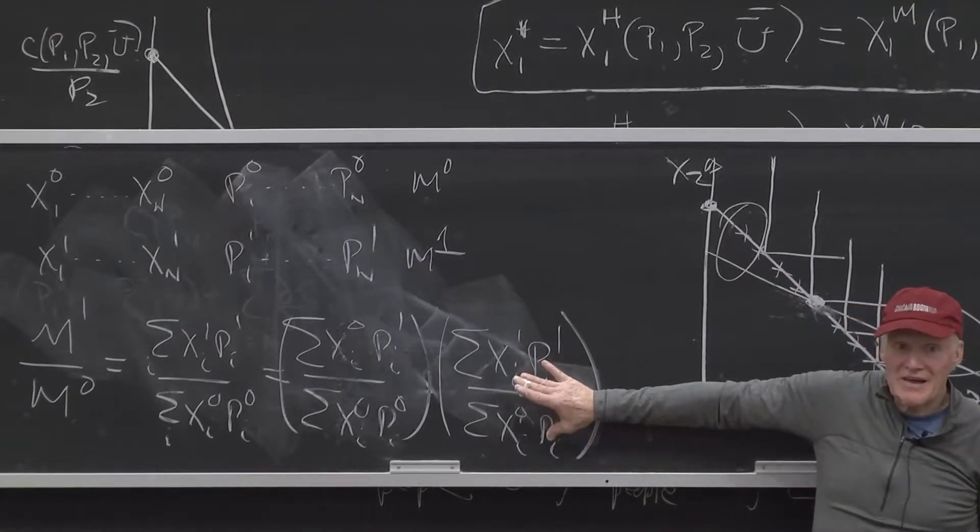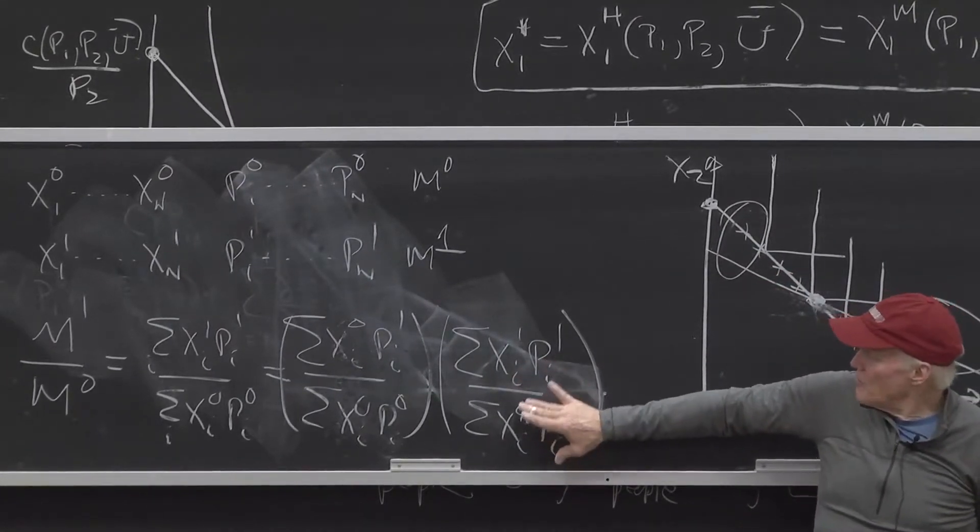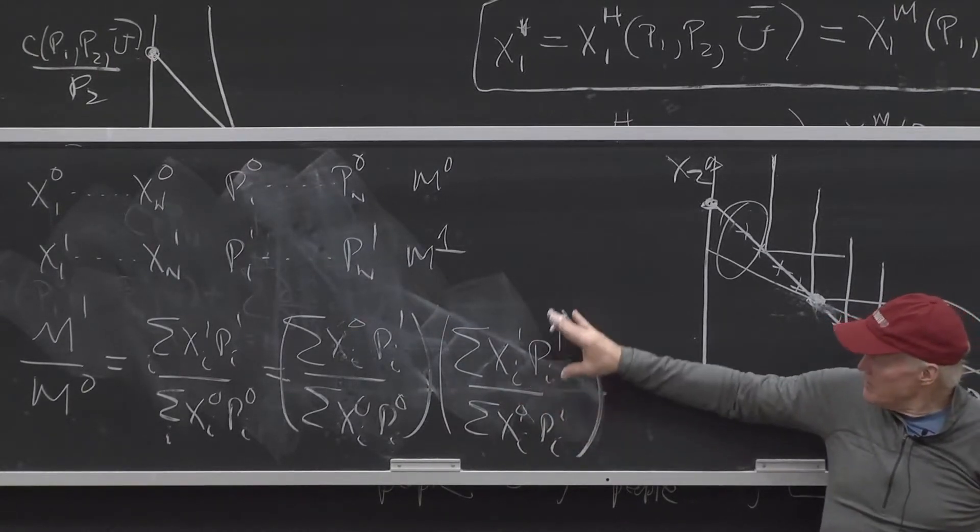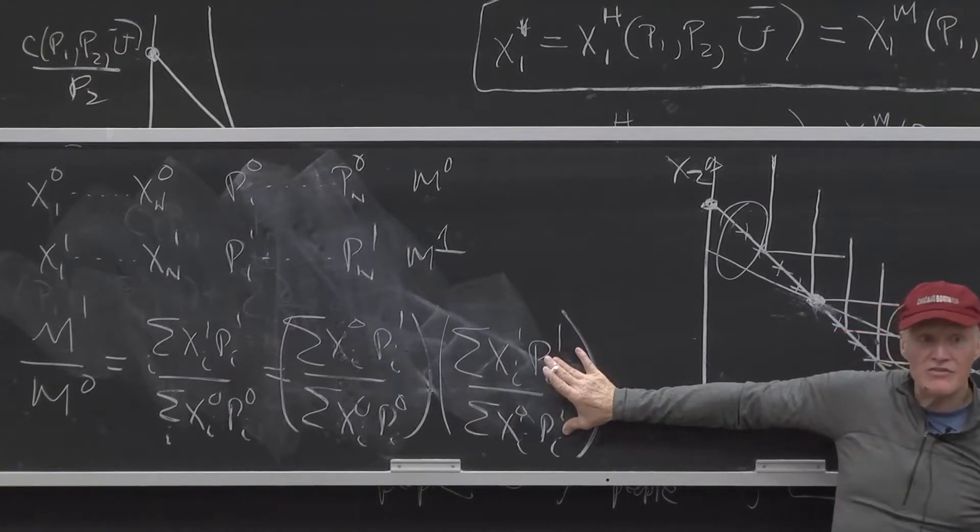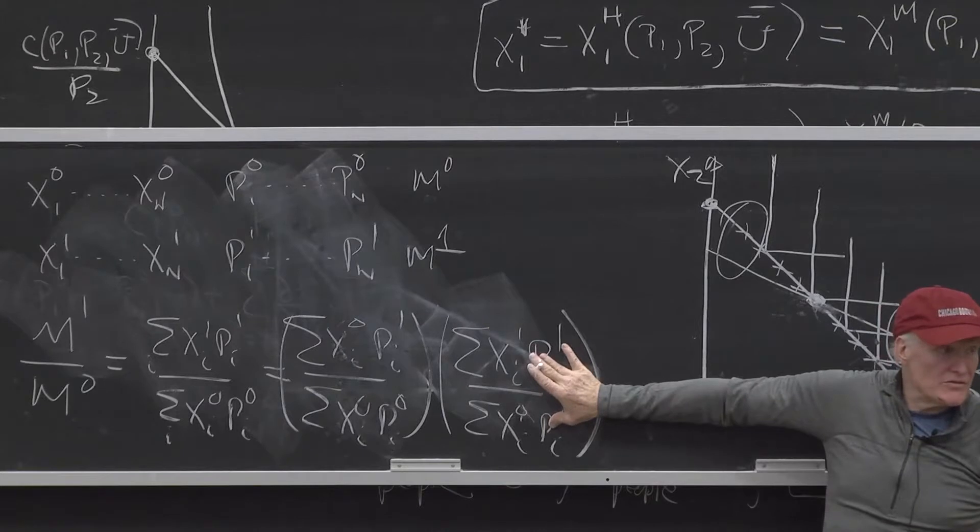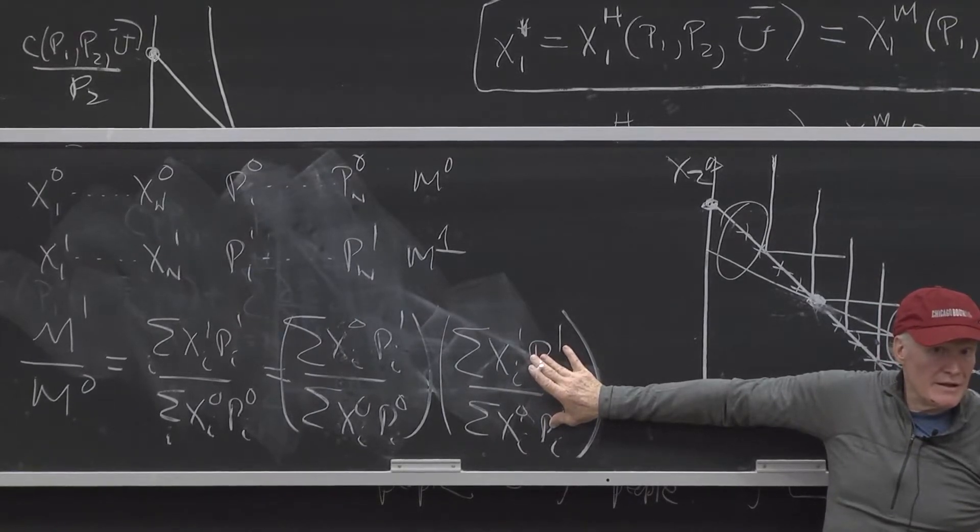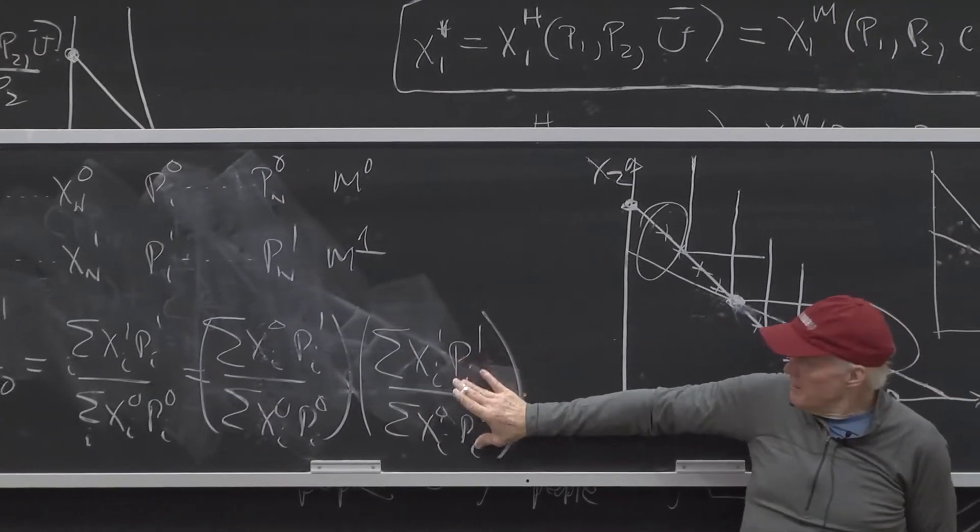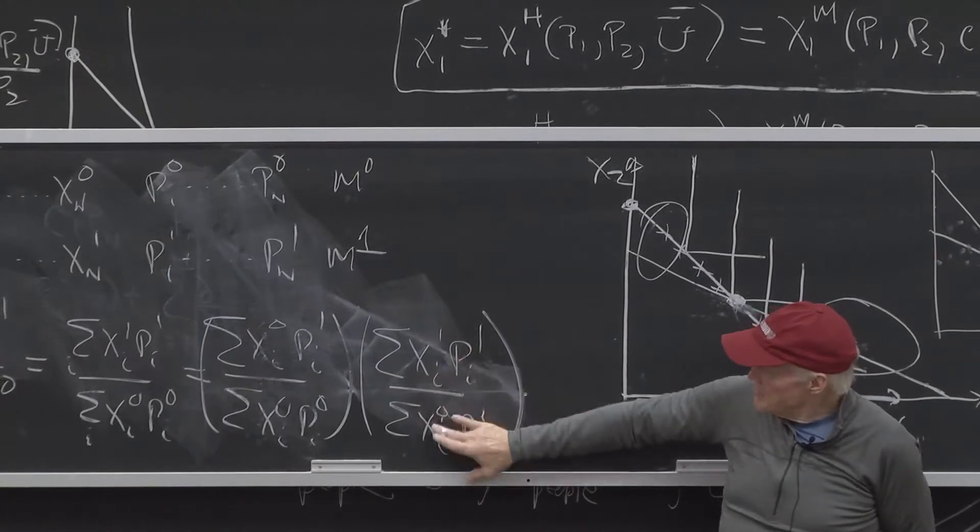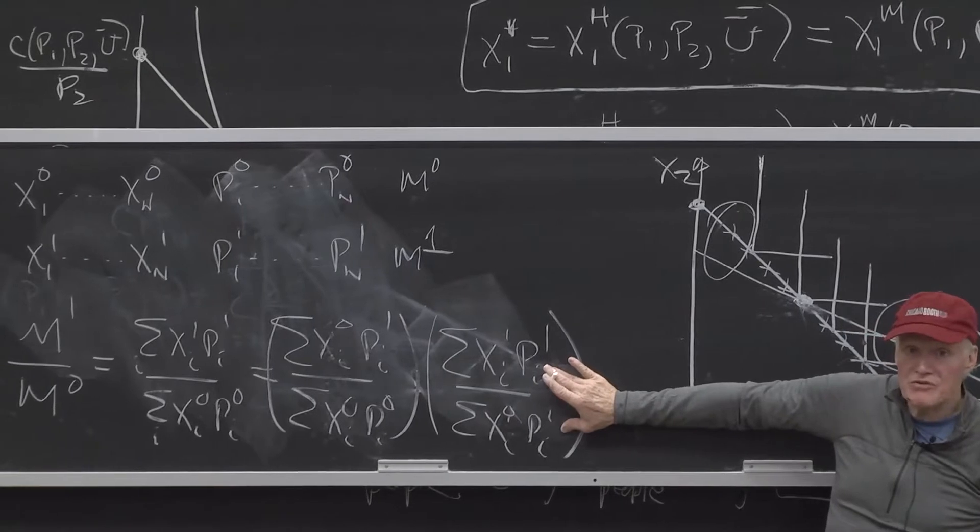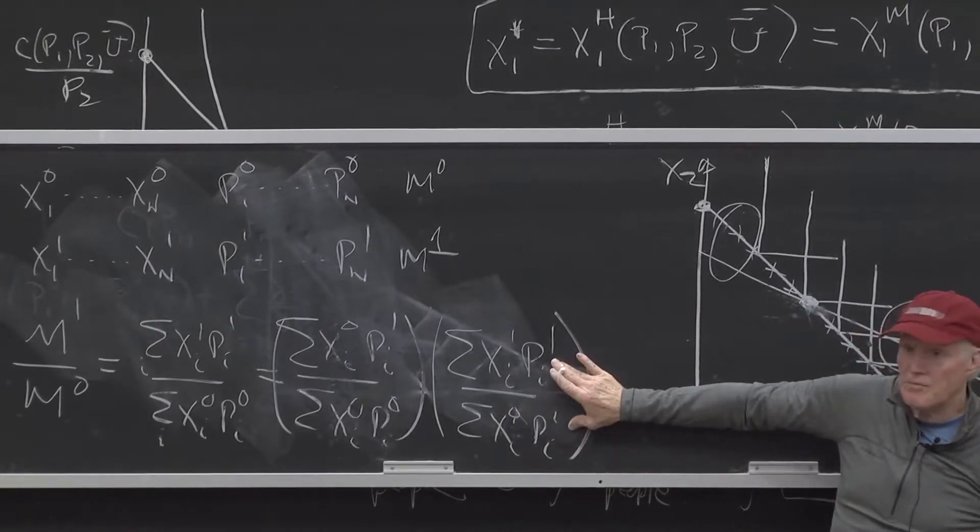This you see a little bit less, but it's important. This is what we call a quantity index. It's a quantity index because it's making a fixed set of prices and valuing the two bundles at the same prices. Everybody understand that? Everybody understand why this is a quantity index? Because it's measuring what's different between the top and bottom is the quantities and the prices we're using are, in this case, the period one prices.